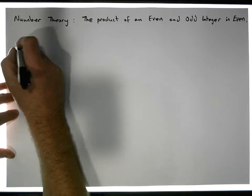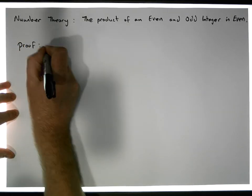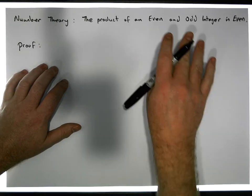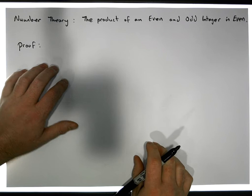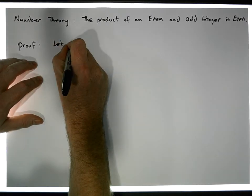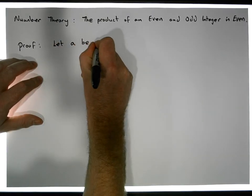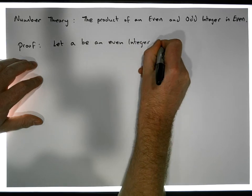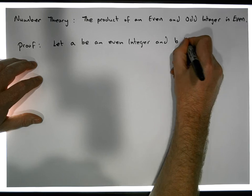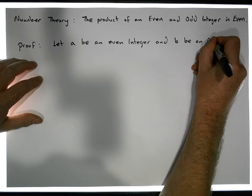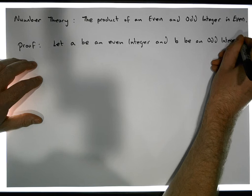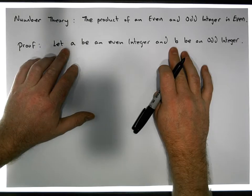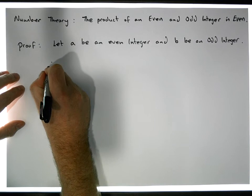So let's try this — here's our proof. To show that the product of an even integer with an odd integer is in fact even, I need to have an even integer and an odd integer to start with. So let a be an even integer and let b be an odd integer. Now we have both an even integer and an odd integer, a and b.